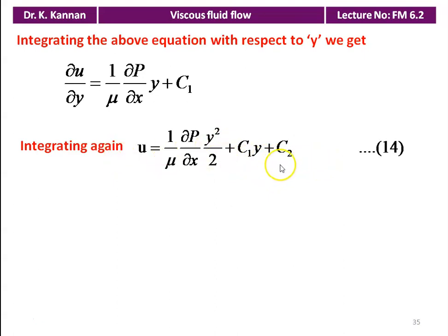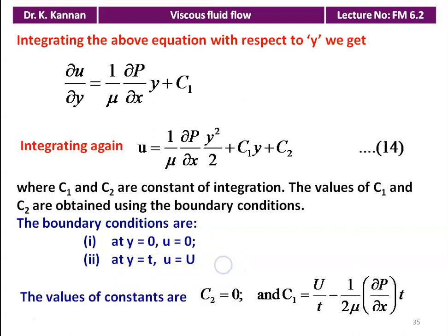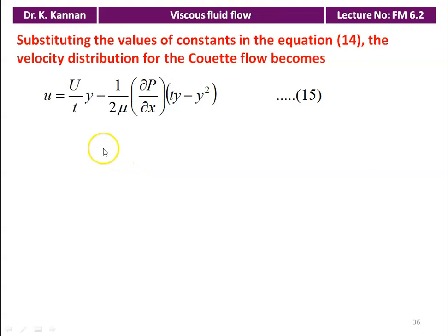In this velocity distribution equation we have two constants C₁ and C₂, requiring two boundary conditions. From the problem definition: at y = 0 (base plate), u = 0; at y = t (top plate), u = U (the plate velocity). Applying these conditions gives C₂ = 0 and C₁ = U/t − (1/2μ)·∂P/∂x·t. Substituting into the equation, the velocity distribution for Couette flow becomes: u = (U/t)·y − (1/2μ)·∂P/∂x·(ty − y²). This is equation number 15.